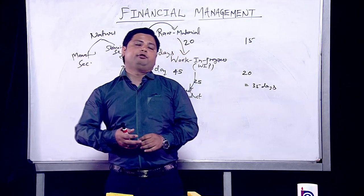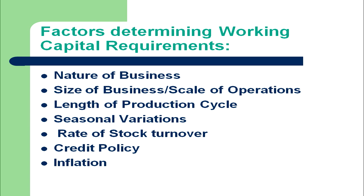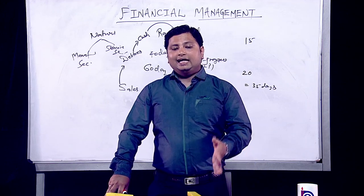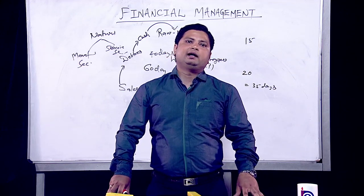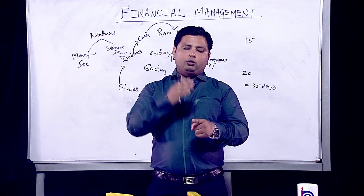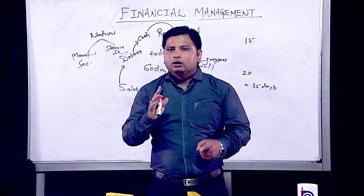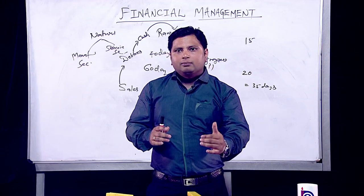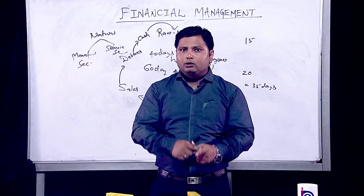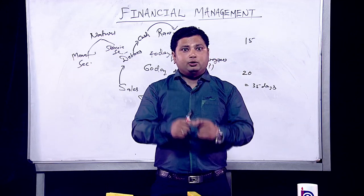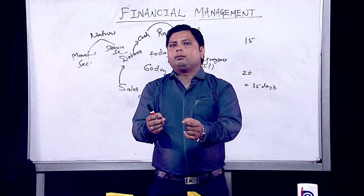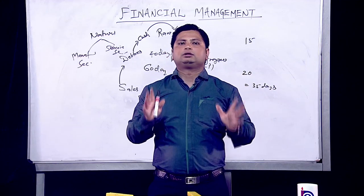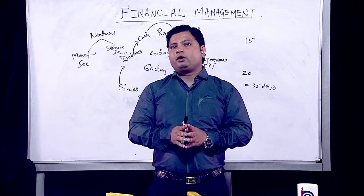The fourth factor is seasonal variations or fluctuations. India is a country of festivals, and as per the season, working capital requirements vary. For example, in winter there is no requirement for ACs or refrigerators, so firms producing those have low working capital needs. But firms producing heaters and other winter-suitable products will have high working capital requirements because the season favors their business.